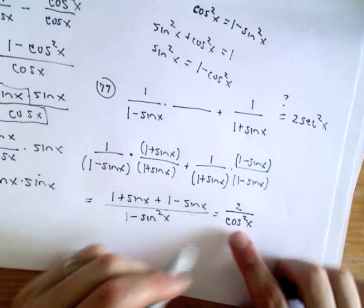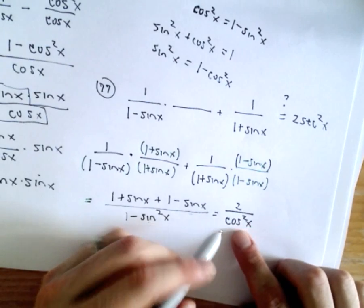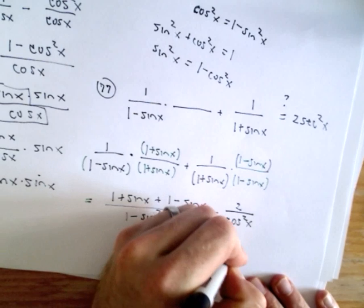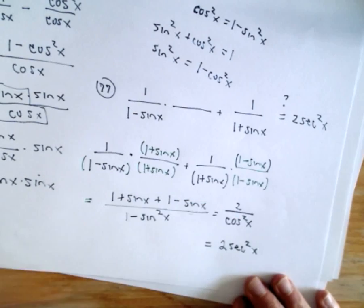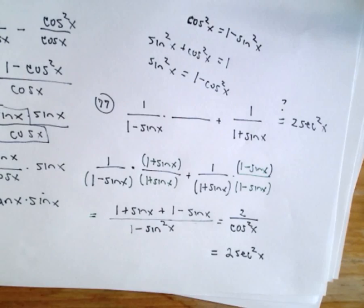And well, 1/cos is secant. So 1/cos² would be sec². Well, we don't have a 1 though. We've got a 2. So we're left with 2 times sec² and that gives us the desired result.